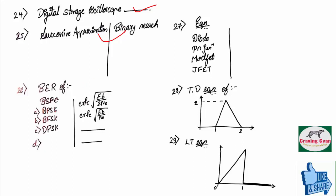Bit error rate. BPSK, BFSK, DPSK. And on the other side, the options was ERCOF under root of EB by 2N0, ERCOF under root of EB by N0, and exponent of EB by N0. Like that, they have given the options.